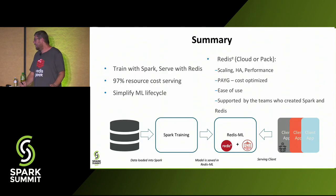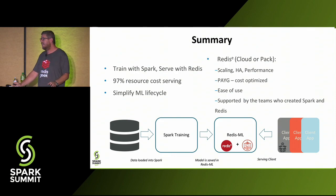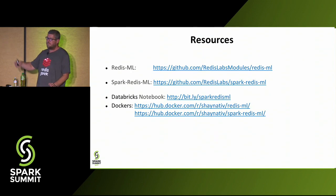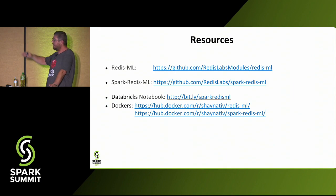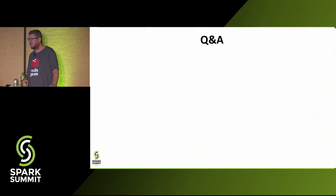To sum it all up, the way to go is to train on Spark and serve it with Redis. It's really easy to do — you'll get about 97% reduction in the cost of serving and a really simple machine learning lifecycle. Here's the list of all the resources: the actual Git repos, a Databricks notebook with a similar demo, and the two Docker containers I mentioned. That's it — time for questions.